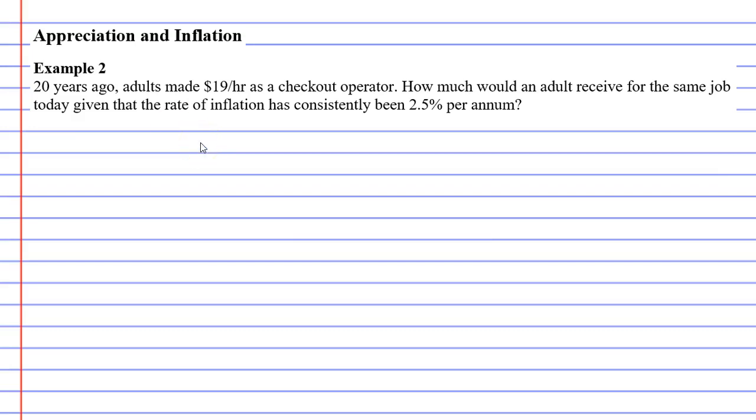We're going to solve this using the compound interest formula: FV equals PV times bracket 1 plus R to the power of N.